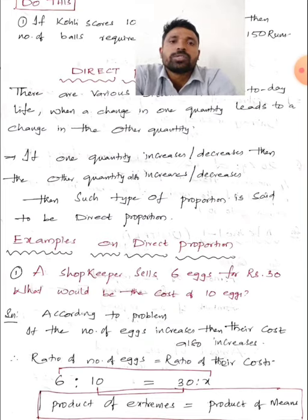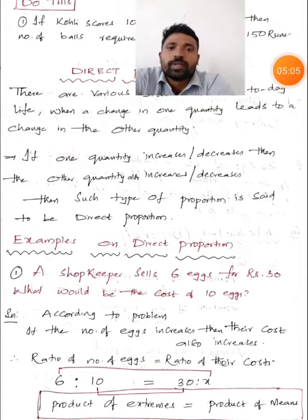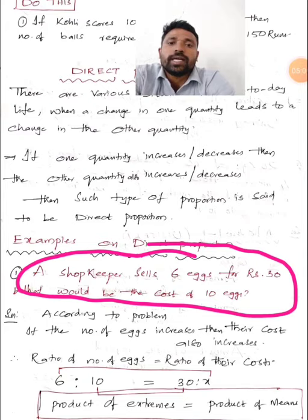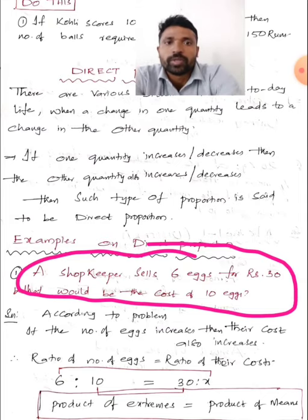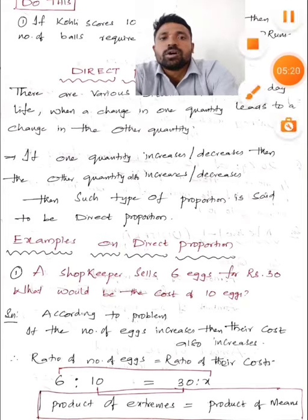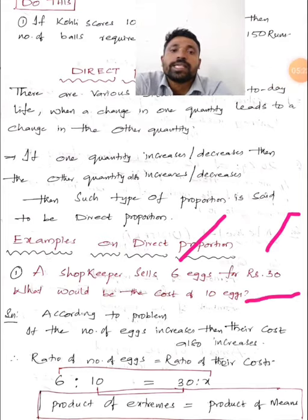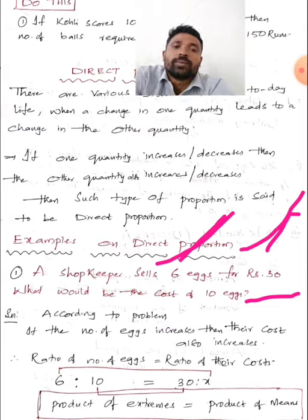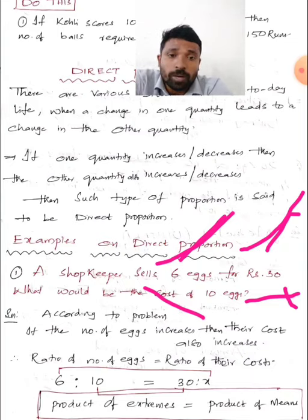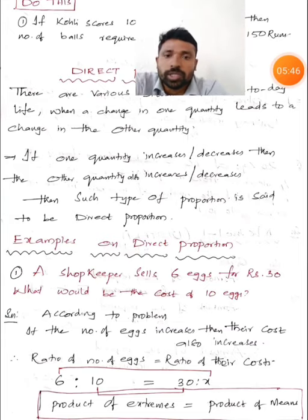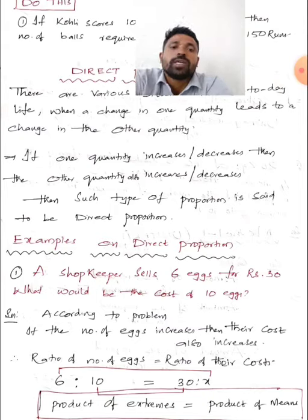Let us take an example on direct proportion. A shopkeeper sells 6x for 30 rupees. What would be the cost of 10x? First, let us identify whether it is in direct proportion. If the number of x increases, automatically the cost also increases — x are increasing and the cost is also increasing, so they are in direct proportion. Ratio of number of x equals ratio of their costs.